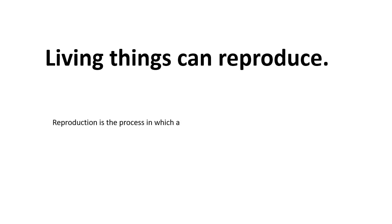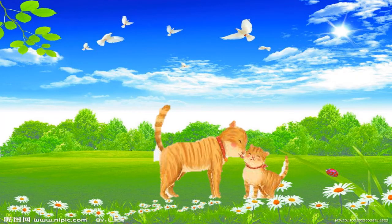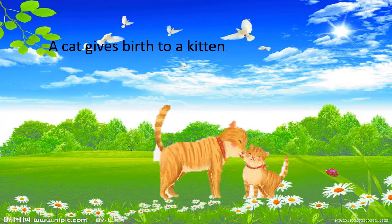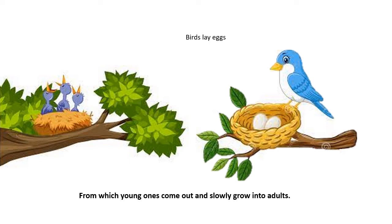Living things can reproduce. Reproduction is the process in which a living thing gives birth to a young one of its own kind. A woman gives birth to a baby. A cat gives birth to a kitten. Some animals lay eggs, from which a young one comes out and slowly grows into an adult.